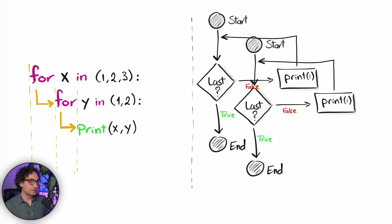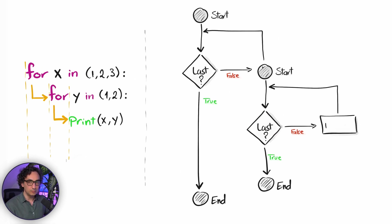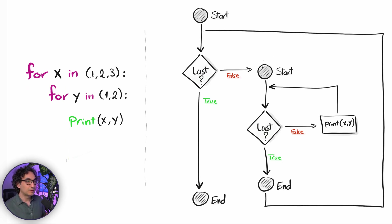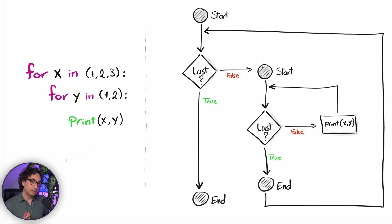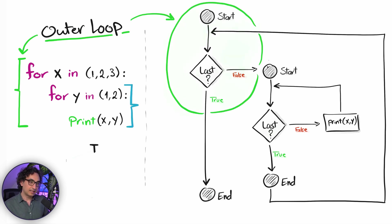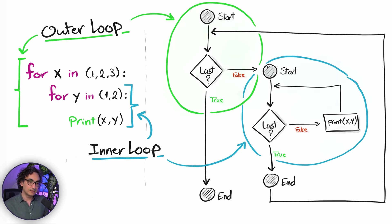Python has two loops connected like this. Once we reach the end of the second loop it goes back to the start of the first loop, and once everything is completed we go to the end. So the start and end of the second for loop are completely connected to the first loop. We call the whole block the outer loop, and the block of code inside it the inner loop.